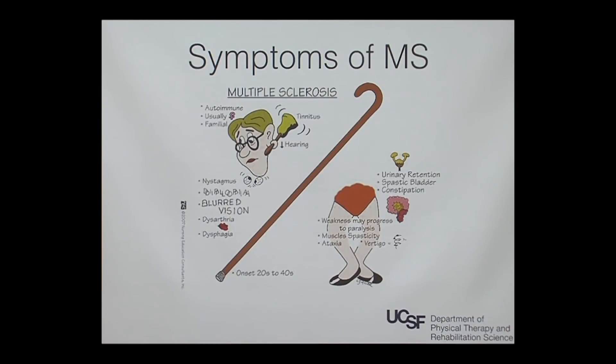Ataxia, which is decreased coordination of the limbs in space, is another symptom. Bladder and bowel issues can also be a symptom. You can get a wide range of presentations — some individuals will have a few symptoms or just one, and some will have multiple systems affected, depending on how far along they are with their MS.